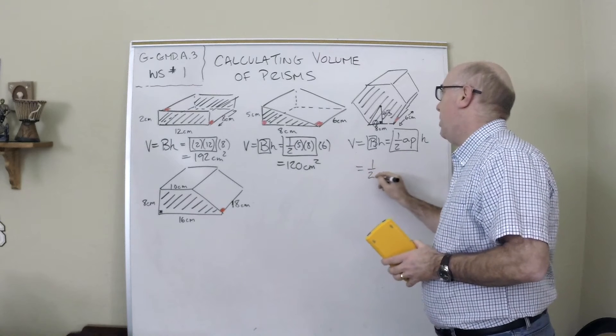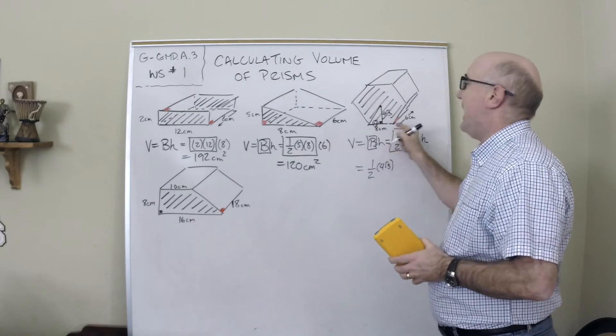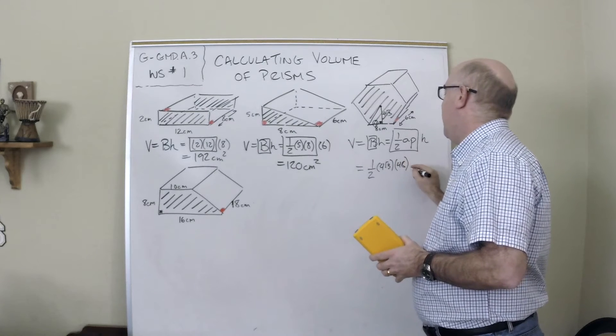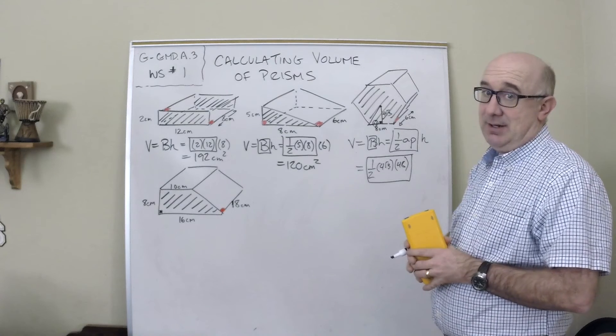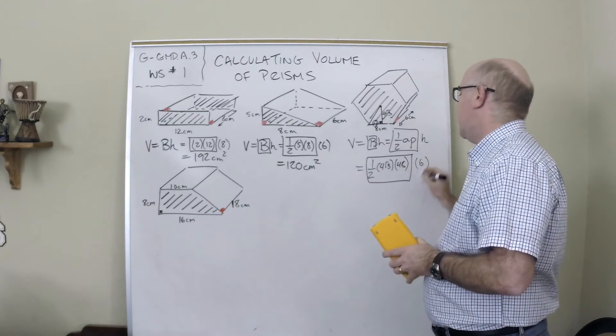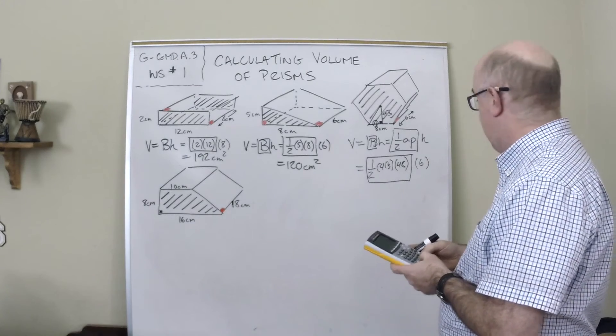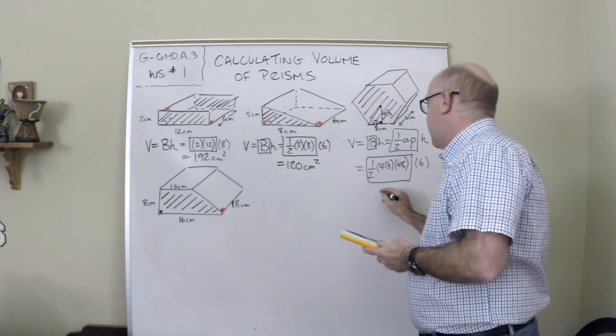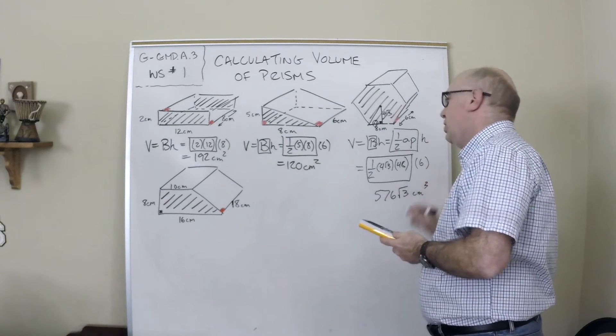So if we do this, the apothem is 4 root 3. The perimeter is 8 times 6, which is 48. And that is the calculation of our hexagon. And we're going to multiply that by the height of 6. So 4 times 48 times 6 divided by 2 is 576 root 3 centimeters cubed.